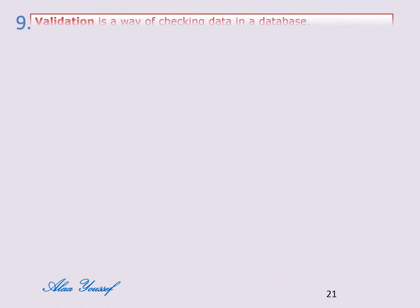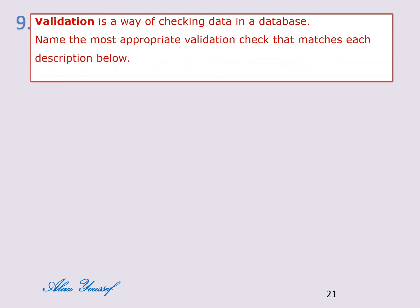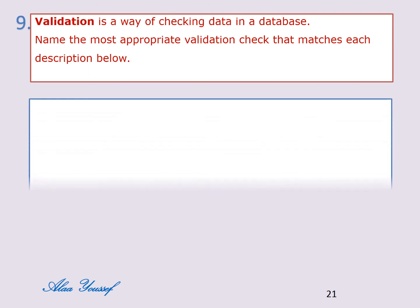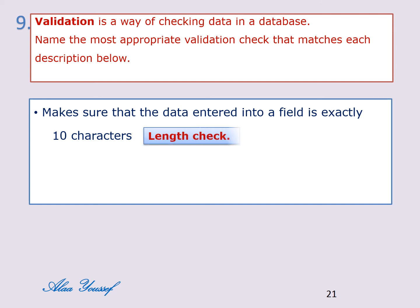Question number nine: validation is a way of checking data in a database. Name the most appropriate validation check that matches each description. First, make sure that the data entered into a field is exactly 10 characters. The answer is: length check.